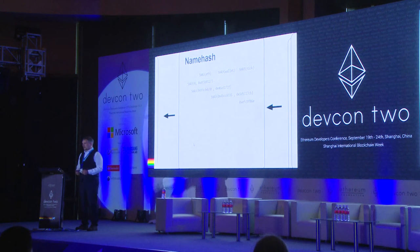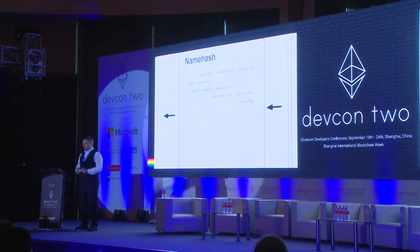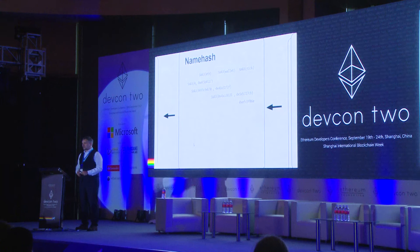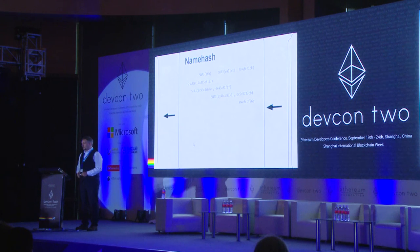The purpose of all this, convoluted though it may seem, is that you can look up a name of arbitrary depth — foo.bar.baz.quax.eth — in a single lookup operation. And yet the registry contract can still answer questions like 'does this person own the parent name for this name?', which allows distributed authority and assignment of authority.